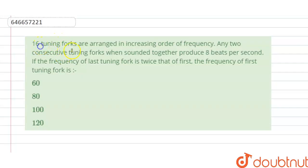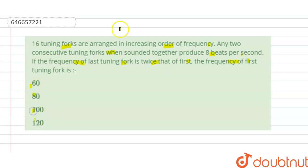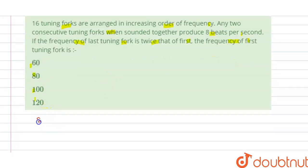16 tuning forks are arranged in order of frequency. If any two consecutive tuning forks, when sounded together, produce 8 beats per second, and if the frequency of the last tuning fork is twice that of the first, find the frequency of the first tuning fork. Options A, B, C, D are given — we have to find the correct option.